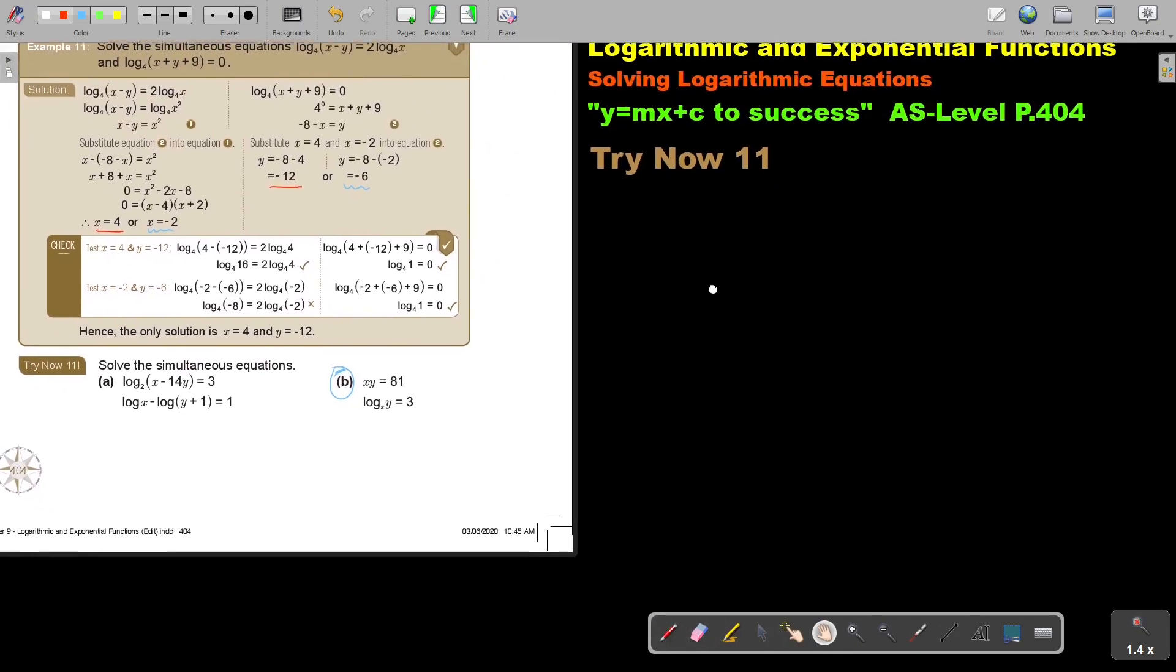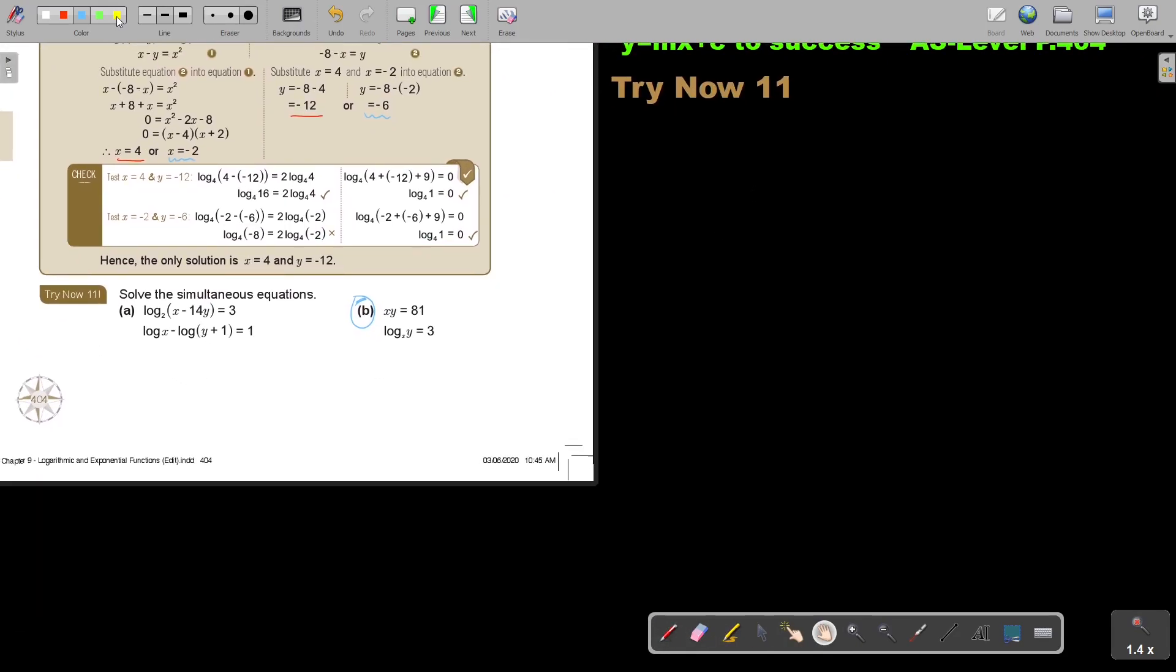Let's start with number B. Solve the simultaneous equation. So this is number B and it's xy is equal to 81. I cannot do anything. I will just make x or y the subject of the formula. I'll do it now. Now, I just want to get a line, see if I can write it next to each other. And this one was log.